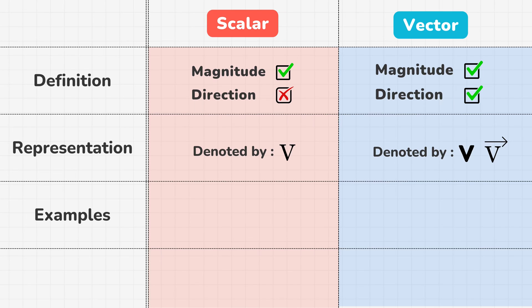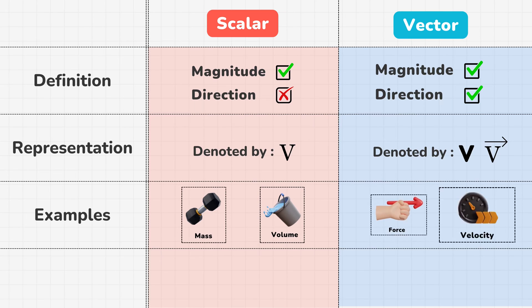Scalars include quantities like mass and volume, and examples of vectors include quantities like force and velocity.